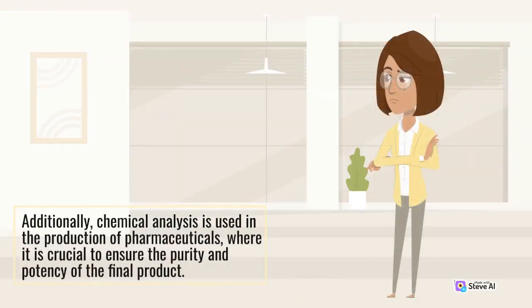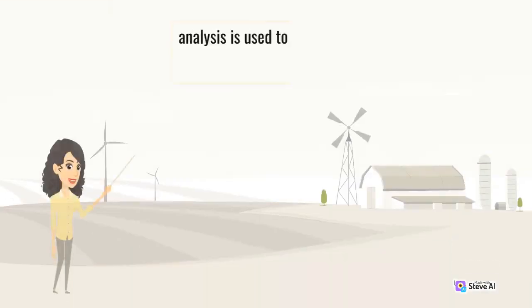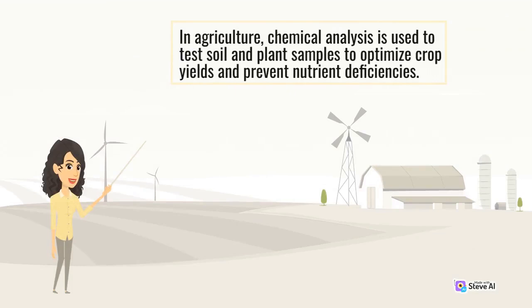Additionally, chemical analysis is used in the production of pharmaceuticals, where it is crucial to ensure the purity and potency of the final product. In agriculture, chemical analysis is used to test soil and plant samples to optimize crop yields and prevent nutrient deficiencies.